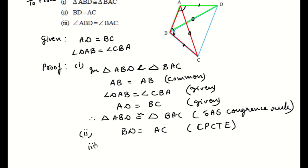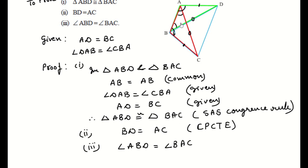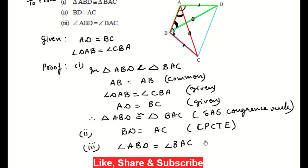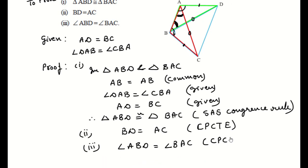And in the third part, angle ABD is equal to angle BAC. Angle ABD and angle BAC are also parts of these same triangles. So this is also equal by CPCT — Corresponding Parts of Congruent Triangles are Equal.